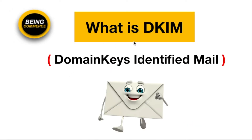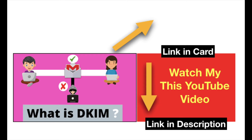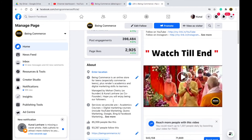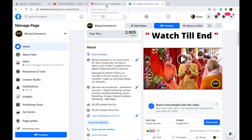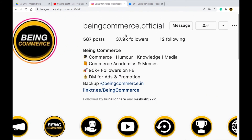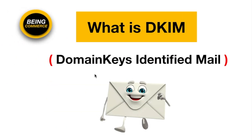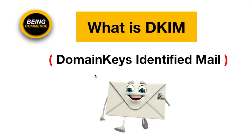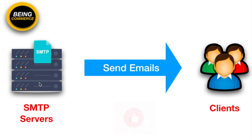In the next video we will talk about what is DKIM — if you want to know, just click on the iCard or the link in the description box. Also, if you haven't followed us on Facebook, please follow us — we have around 93,000 plus followers on our Facebook page Bing Commerce. You can also follow Bing Commerce on Instagram at bingcommerce.official, where we have around 37,000 plus followers. If you want amazing content about email marketing, check out my full email marketing playlist. We also teach how to create your own SMTP server to send unlimited emails for very cheap. That's all for today's video — see you in the next one, bye bye.